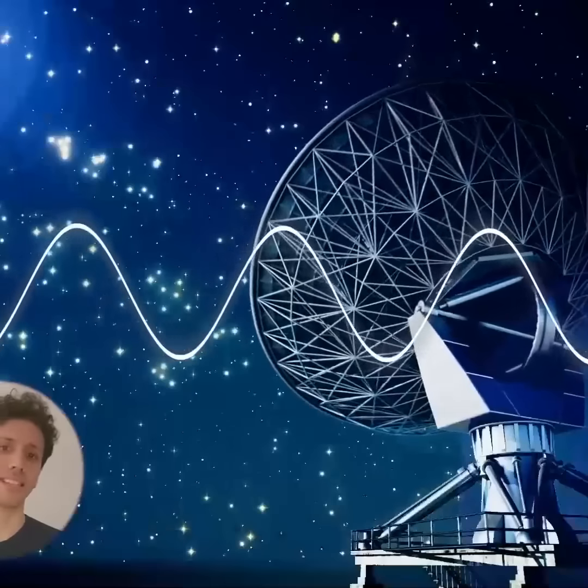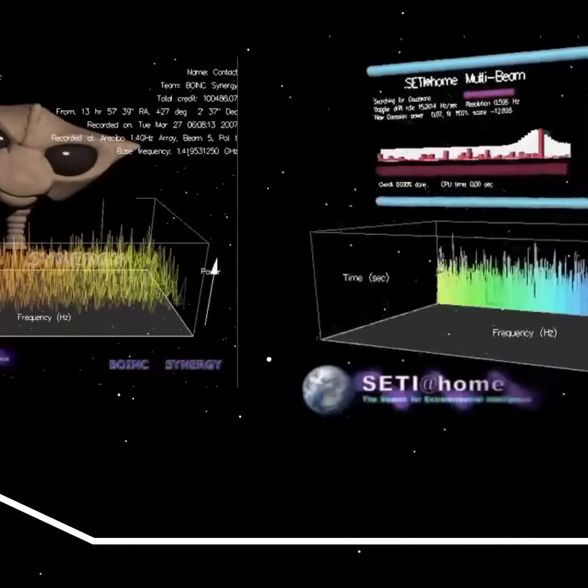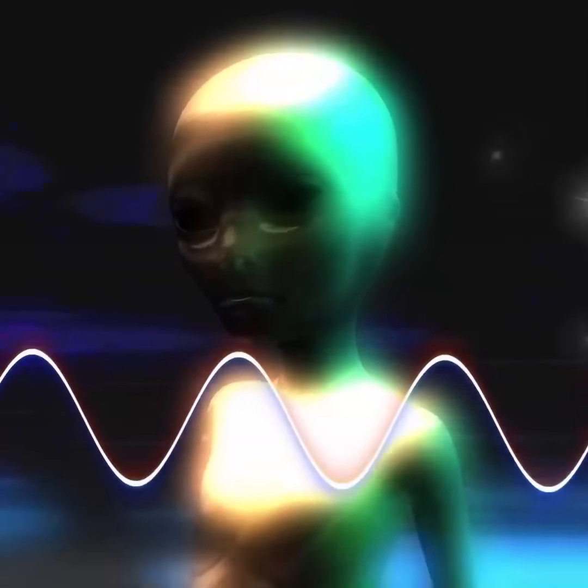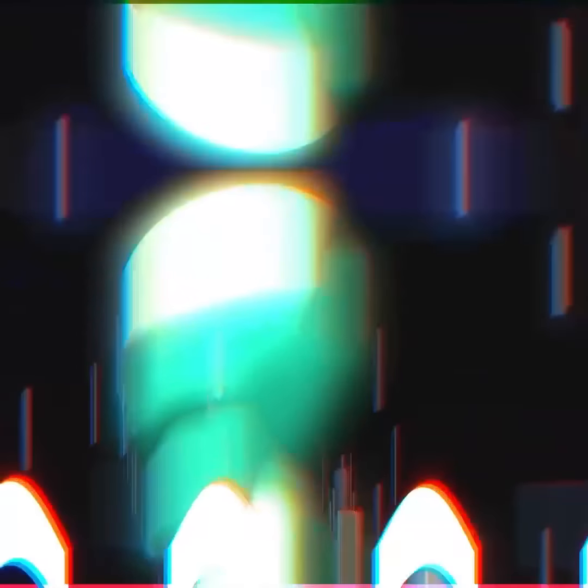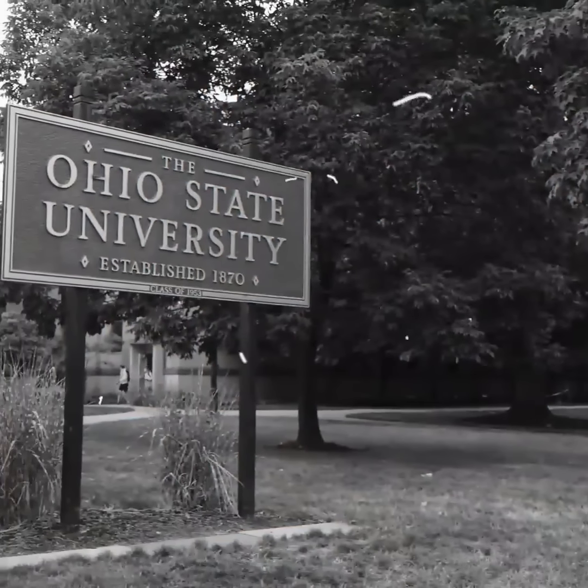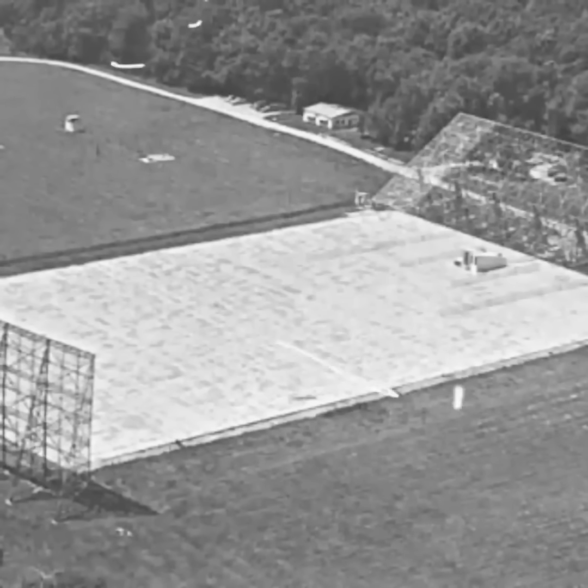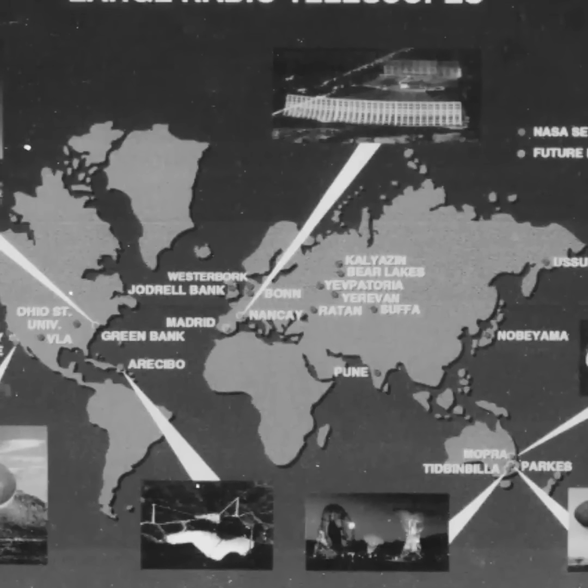Since then, the signal has become legendary in the search for extraterrestrial intelligence, or SETI, community. But what exactly was that mysterious signal? To understand this, let's go back to the 1970s when the Ohio State University Big Ear Radio Telescope was active. For more than two decades, from 1973 to 1995, it played a major role in the university's SETI program.